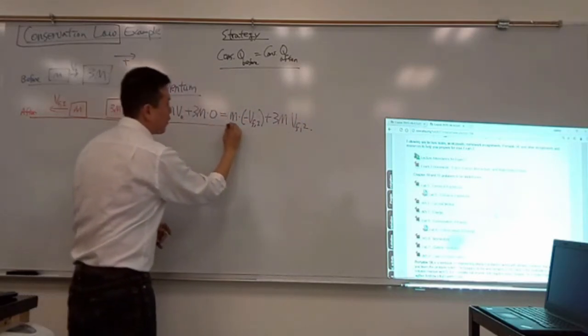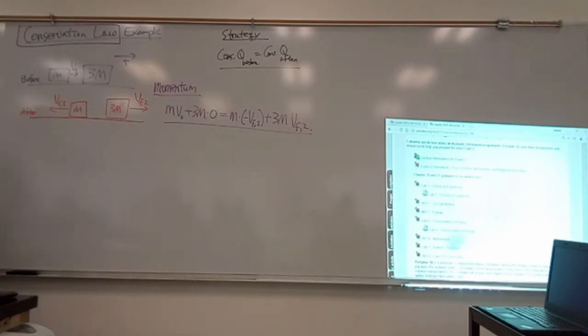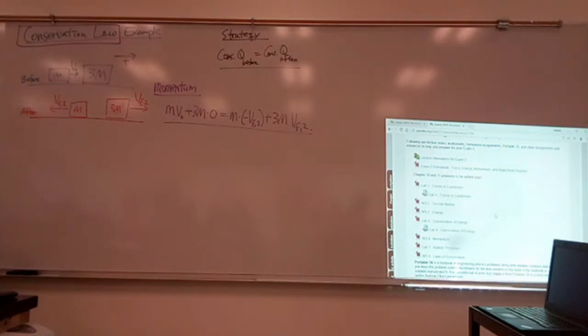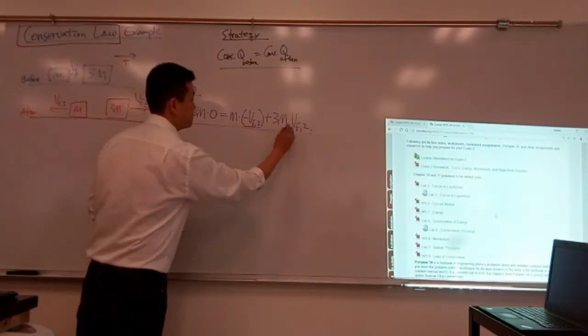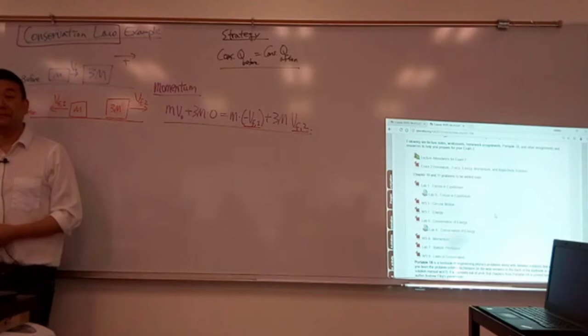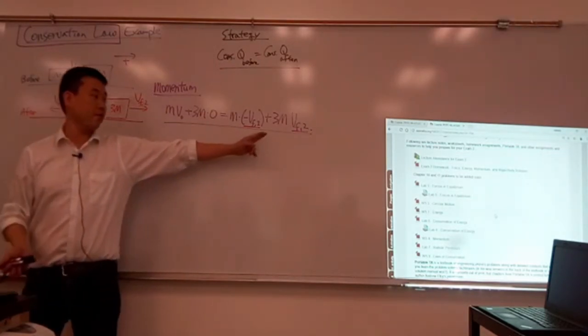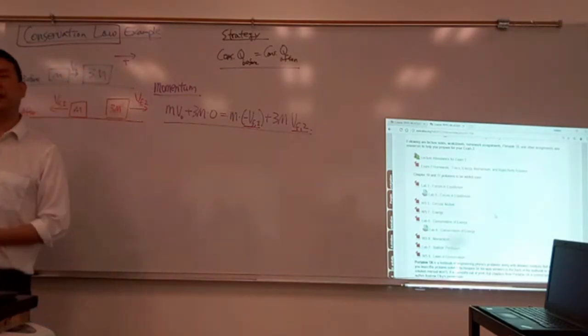Now as you look at this equation, does this look like an equation I can solve? How many unknowns? Two unknowns, right? It means I can't solve it. I don't have enough information yet. I need additional pieces of information that'll tell me how to solve for either one of these two. So this is what it comes down to. In this particular case, I need to know another conserved quantity.